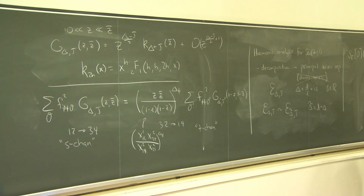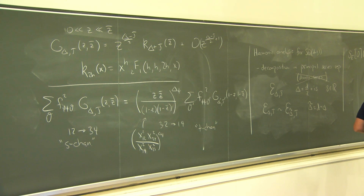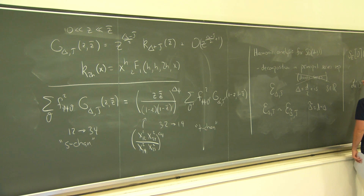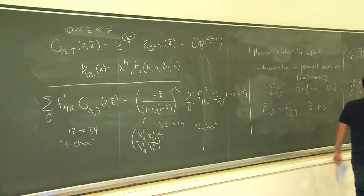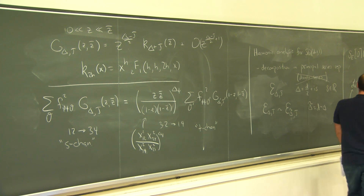The point of doing this is that the product of these three factors together transforms like a dimension-zero scalar. Under conformal transformation, O picks up some factor omega — which comes from the rescaling of the metric — to the power delta. O-tilde picks up the same rescaling factor to the power (D minus delta). And this thing has mass dimension minus D, so it picks up a factor omega to the minus D. Overall, under rescaling, this thing is invariant — it transforms like a dimension-zero scalar, and that means it can be integrated in a conformally invariant way.